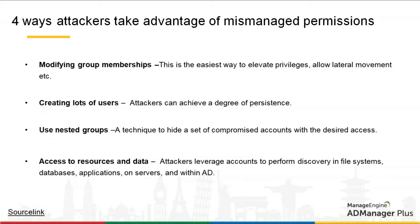Another way attackers take advantage is by using nested memberships. For example: there is a domain admin group, group A, and group B. You add group A to the domain admin group, group B to group A, and a backdoor user to group B. Organizations typically monitor only the direct members of privileged groups, not indirect or nested memberships. Attackers also leverage compromised accounts to perform discovery across Active Directory, file systems, databases, and custom third-party applications.